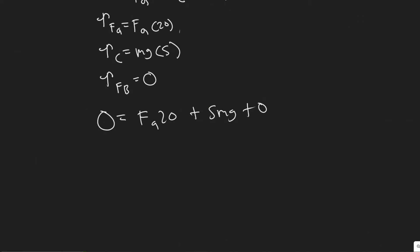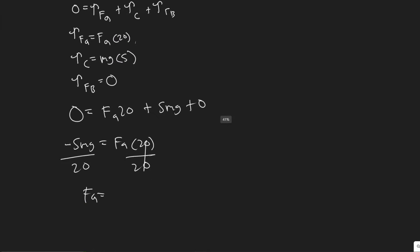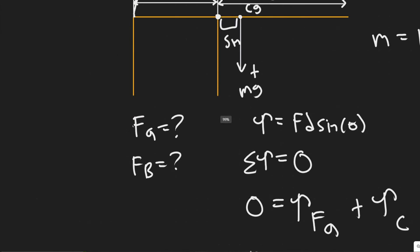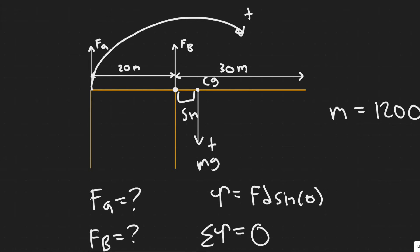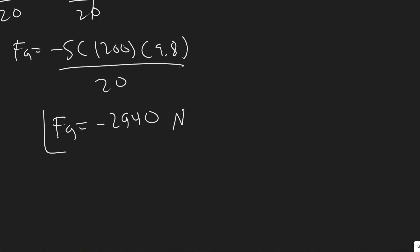Rearranging: minus 5mg equals FA times 20, so FA equals minus 5mg divided by 20. Plugging in values: minus 5 times 1200 times 9.8, divided by 20. This gives FA equals negative 2940 Newtons. The negative sign indicates the force actually points downward, opposite to the direction we originally assumed.